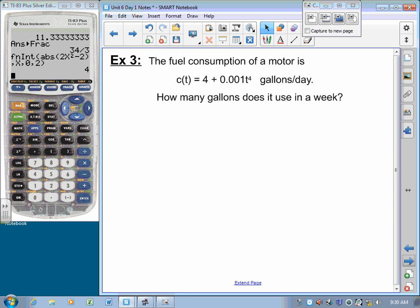The fuel consumption of a motor is given by C(t) equals 4 plus 0.001t to the 4th gallons per day. How many gallons does it use in a week?